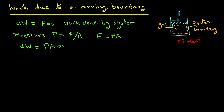Substituting into our equation gives dW equals PA times ds. Note that area times distance equals volume, so dW equals P times dV — pressure times the change in volume. With the movement of the piston because the gas was heated, the work done by the system is W1-2 equals the integral from 1 to 2 of P dV.